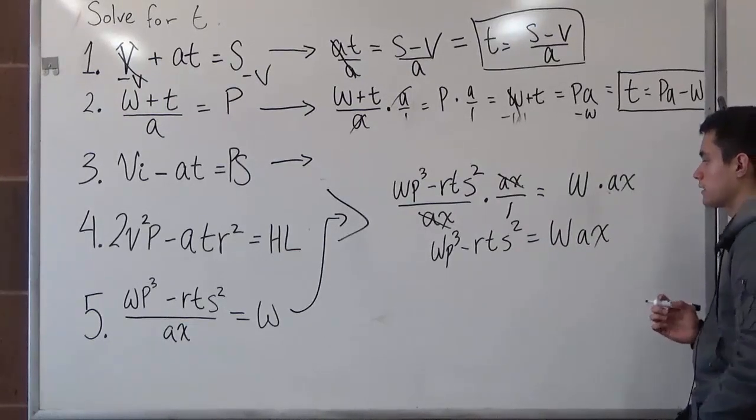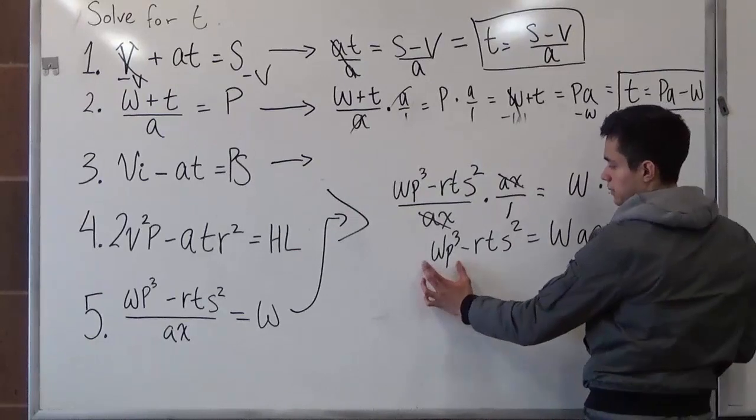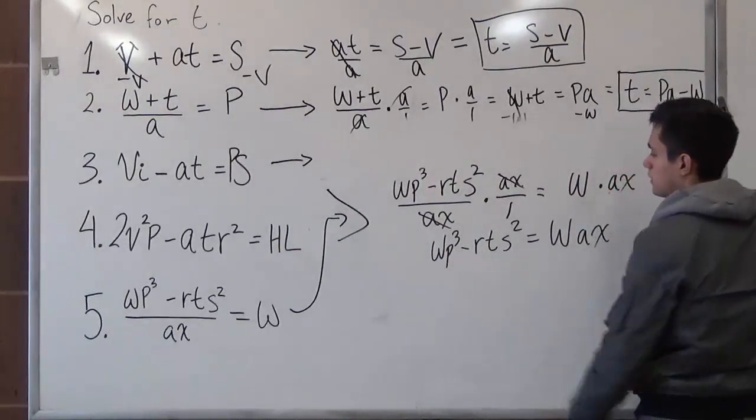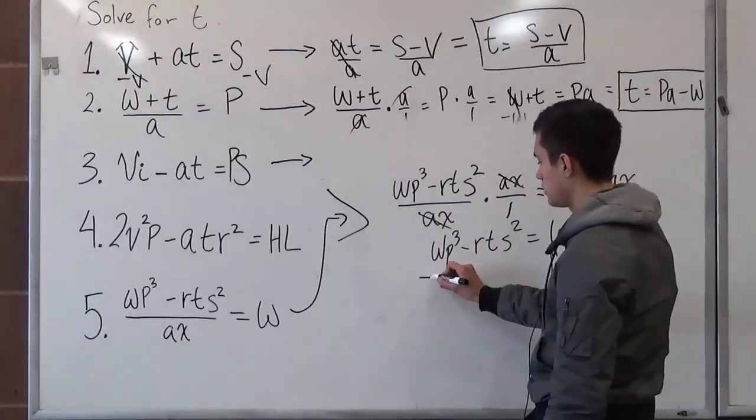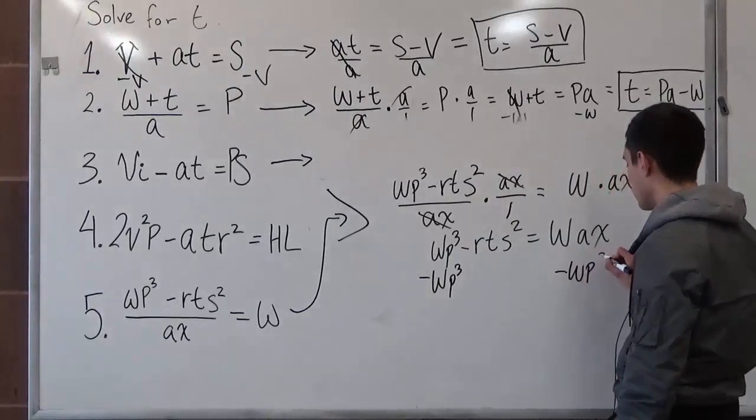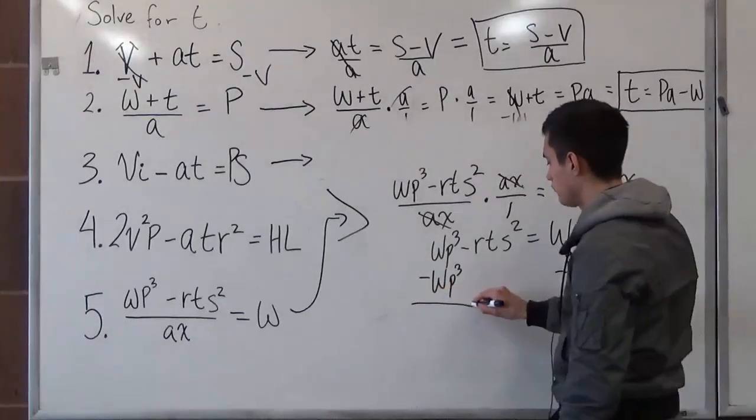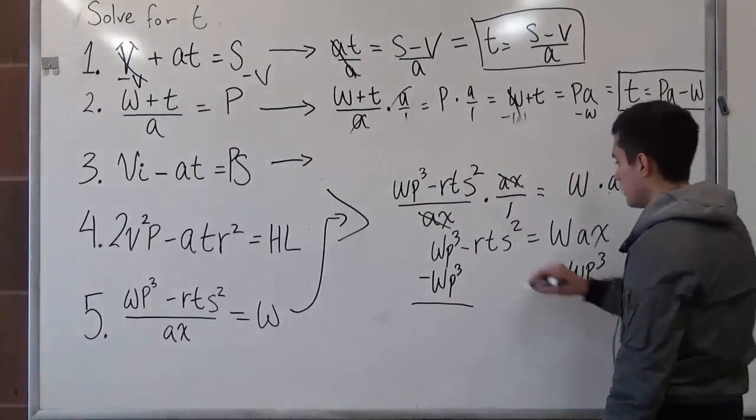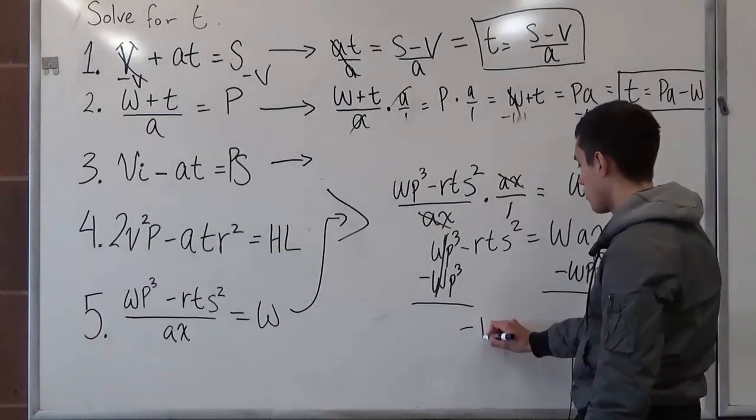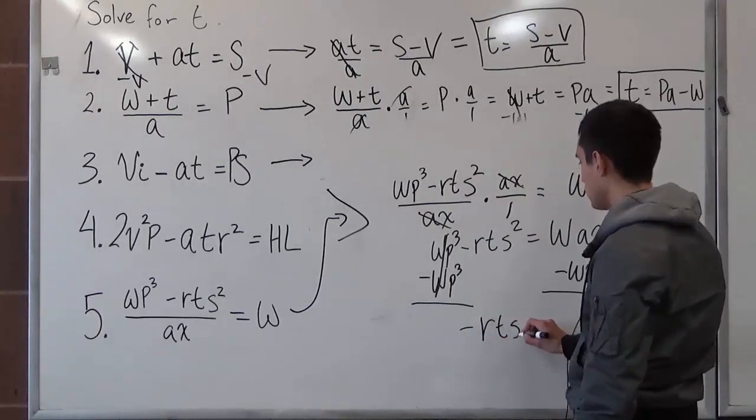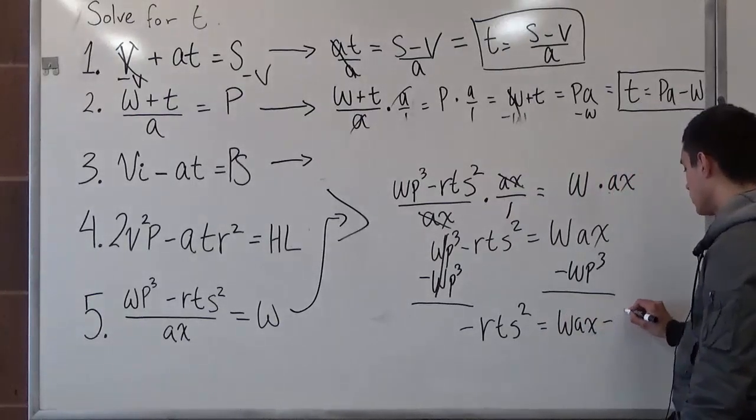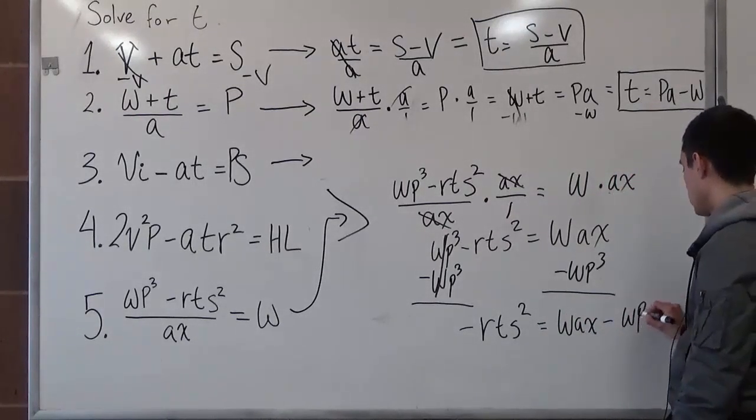So as we did last time, let's treat this as a whole and try to move it to this side in order to get t by itself. And that would just be minus wp to the third minus wp to the third. Since we're treating this as a whole, this cancels out. And we're left with minus rts squared is equal to wax minus wp to the third.